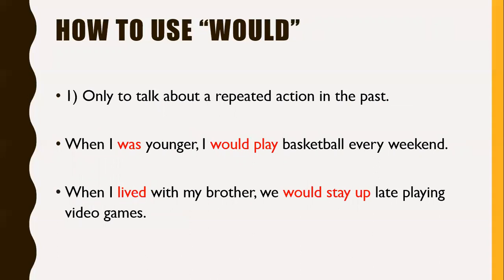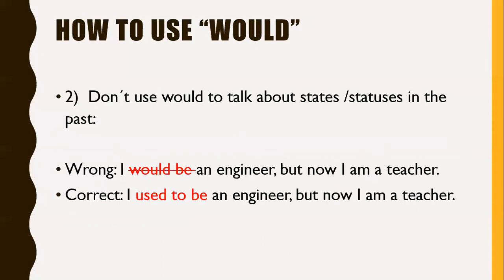This is the third way to speak about the past: 'would', used only to talk about a repeated action in the past. For example: when I was younger, I would play basketball every weekend; when I lived with my brother, we would stay up late playing video games. Remember, 'would' is used only for repeated actions in the past that you don't do anymore. Don't use 'would' to talk about states or statuses. Wrong: 'I would be an engineer, but now I am a teacher.' Correct: 'I used to be an engineer, but now I am a teacher' — because that is a state or status, not an action.